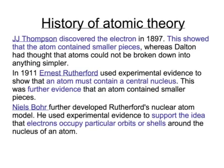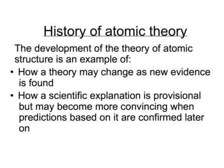Niels Bohr further developed the idea of there being a nucleus with electrons around the outside. His work supported the idea that electrons weren't just randomly arranged within the atom, but were on particular levels or shells, as we learn in school now. Like any theory, atomic structure is an example where a theory is either accepted because other scientists find supporting evidence, or challenged because evidence conflicts with it, requiring a new theory.